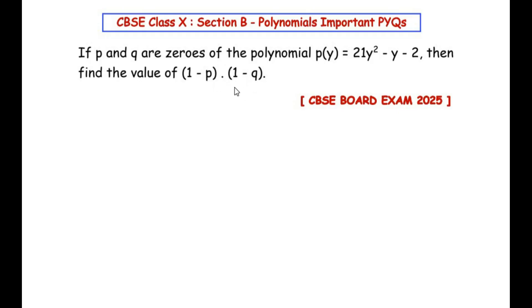So let us try to understand the question first. Here a polynomial equation is given and it's been mentioned that p and q are the zeros of the polynomial. We have to find out the value of this expression. Let us begin by writing the general form of quadratic equation because this is a quadratic equation since the highest power of y here is 2.